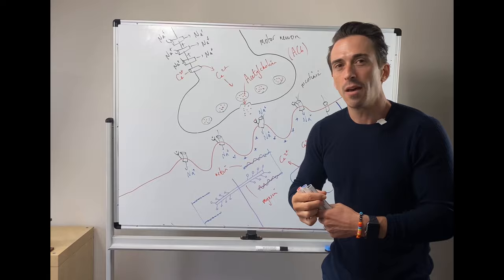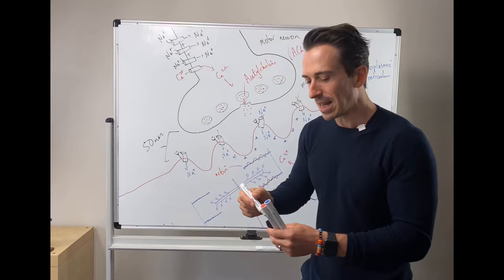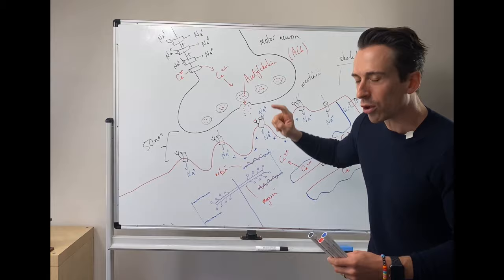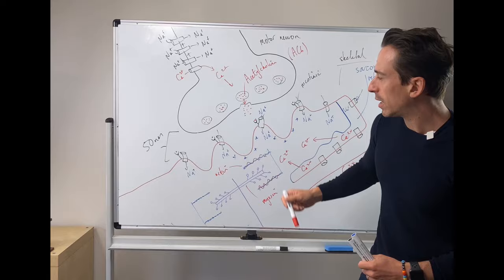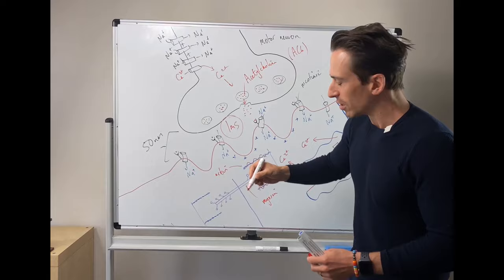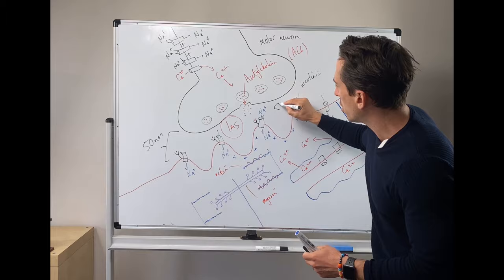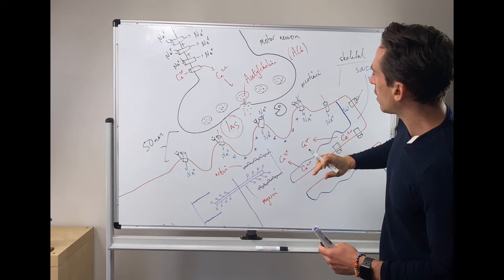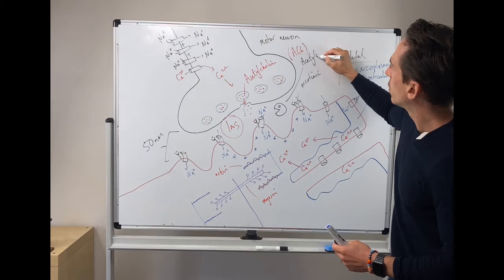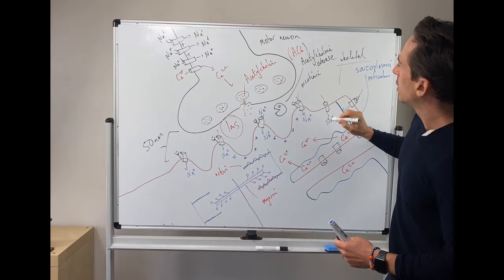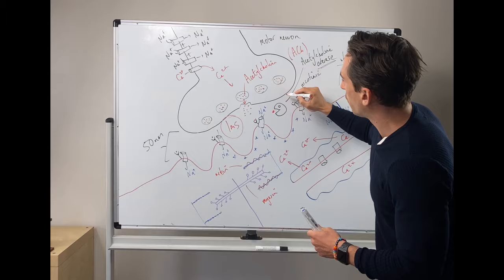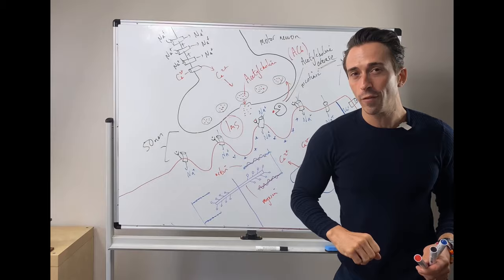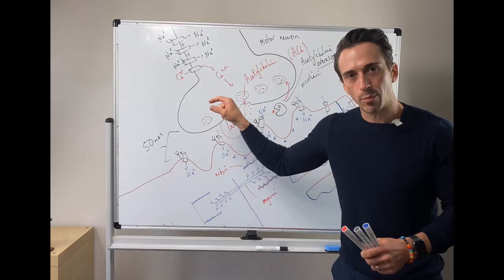A couple of important points: this synapse gap is only 50 nanometers — very, very narrow. When acetylcholine is released, it has only one millisecond to bind to its receptor and initiate sodium influx. After one millisecond, there is a molecule called acetylcholinesterase that breaks down acetylcholine in this synapse and forces it to be recycled back into the presynaptic terminal so it can be released again. Acetylcholine has one millisecond to do its function before it's degraded and thrown back in.